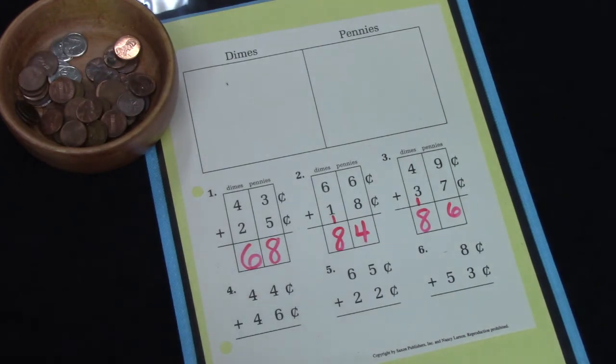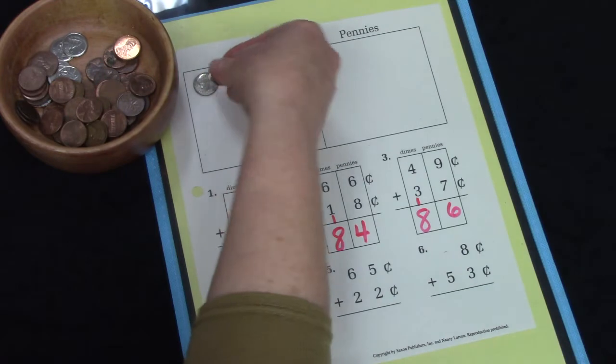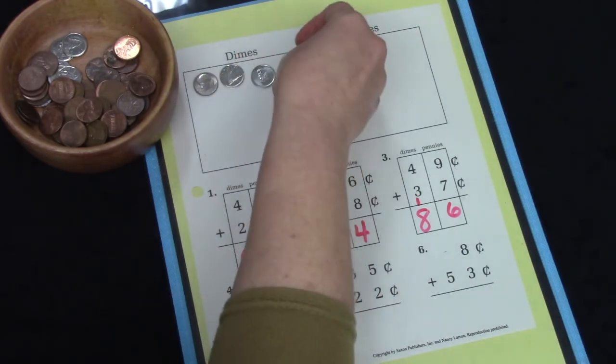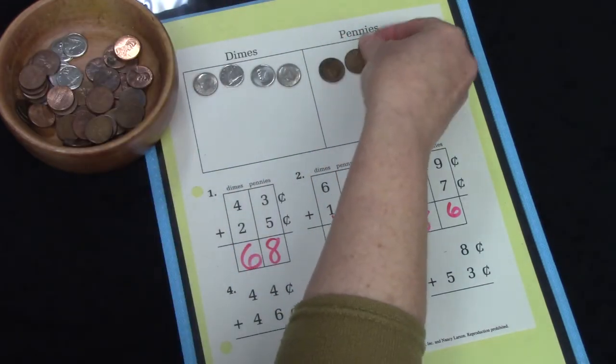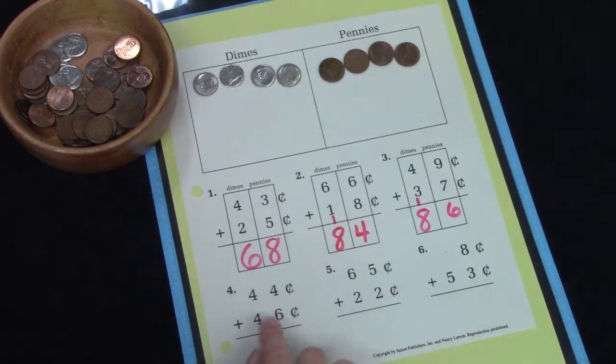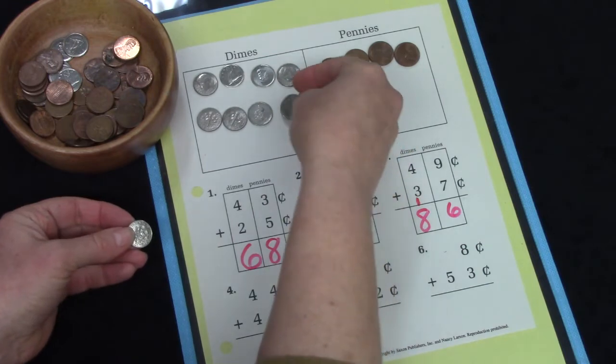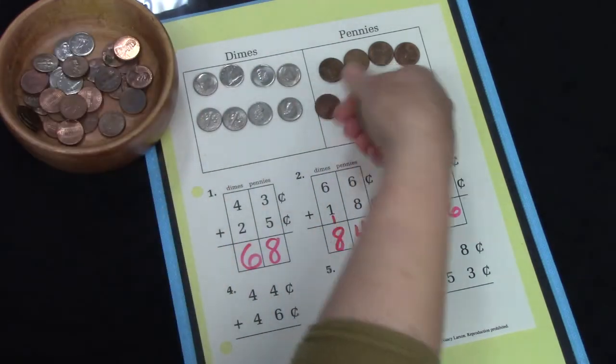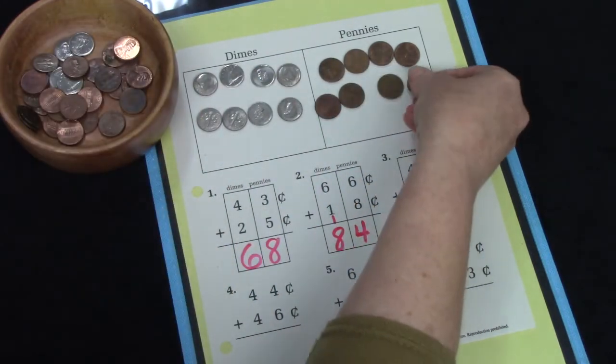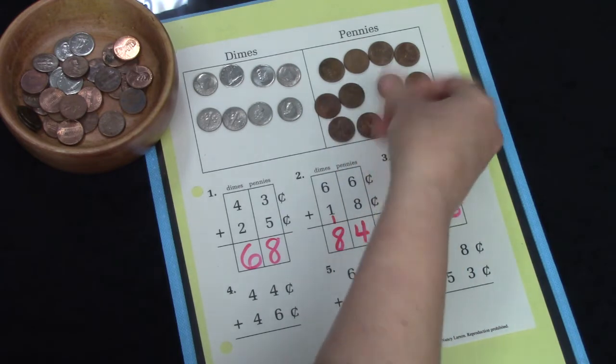First, we're going to put down 44: 10, 20, 30, 40, 41, 42, 43, 44. And then we're going to do 46: 10, 20, 30, 40, 41, 42, 43, 44, 45, 46.